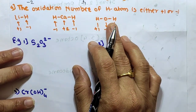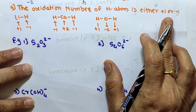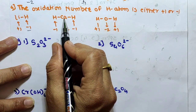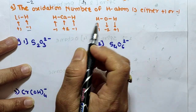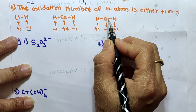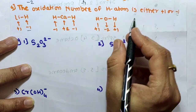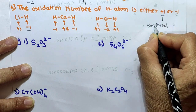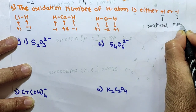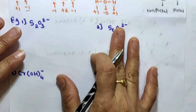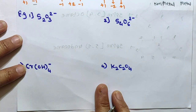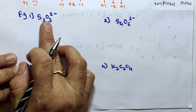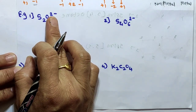Rule 4: The oxidation number of hydrogen is either +1 or -1. When hydrogen is bonded with metals, its oxidation state is -1. When hydrogen is bonded with non-metals, its oxidation state is +1. Rule 5: For a polyatomic ion, the algebraic sum of the oxidation numbers of all atoms is equal to the net charge of the ion.